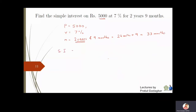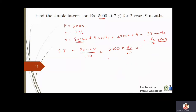The simple interest formula gives: SI = P × n × r / 100 = 5000 × (33/12) × 7 / 100. We always calculate time in years, so 33 months becomes 33/12 years. Setting up the calculation: 5000 × 33 × 7 divided by 12 × 100.